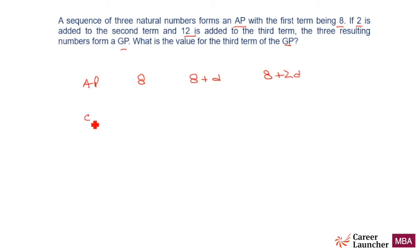Now what happens when it becomes a geometric progression? If 2 is added to the second term, it becomes 10 plus D. If I add 2 to 8 plus D, it will become 10 plus D.